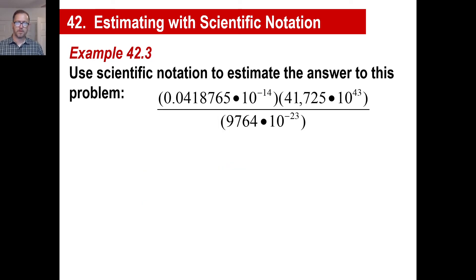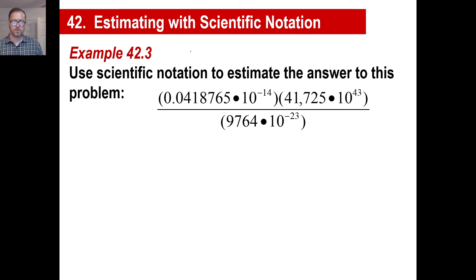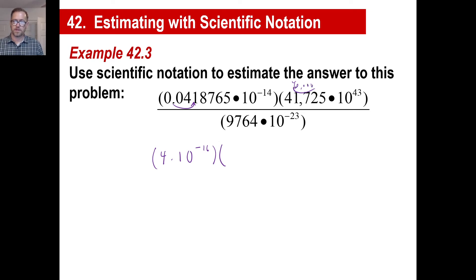Let's try another one. We just want each one of these numbers to have one integer and a bunch of zeros. So this one looks pretty easy — we move it over twice, which turns it into a 4. So that'll be 4 times 10 to the negative 16th power. This one I would just call 40,000 — that's going to move over 4 times, giving us a 4. And then 4 plus 43 is 47.